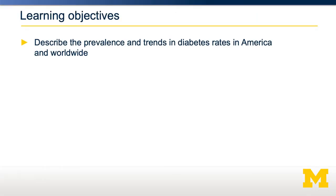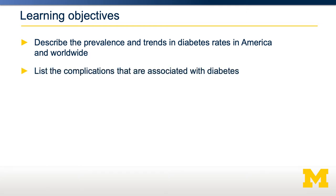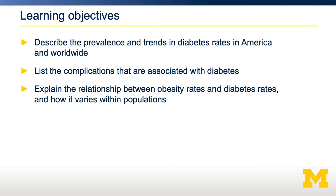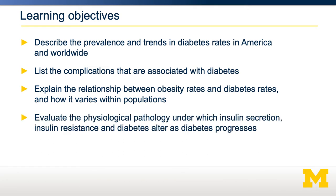In this video, we're going to discuss a chronic disease known as type 2 diabetes, which involves impaired control of blood glucose. We're going to describe both the prevalence and trends in diabetes rates both in America and worldwide. We're going to talk about some of the devastating complications that are connected with diabetes, and explain the relationship between obesity rates and diabetes rates and how that can vary across different populations. We're then going to talk about the pathology by which diabetes occurs and how insulin secretion and insulin resistance are connected as diabetes progresses.